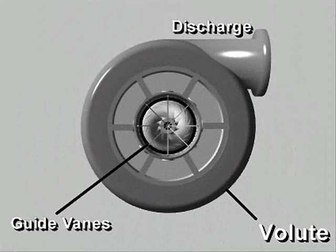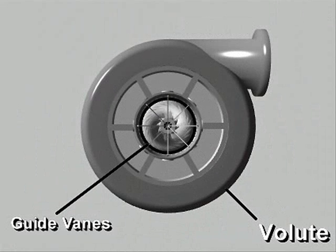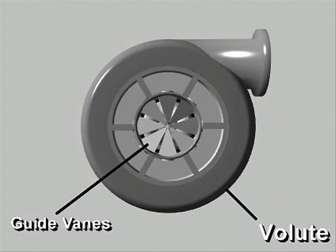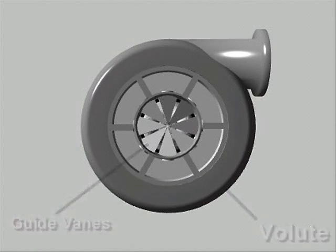Inlet guide veins control a centrifugal compressor's capacity. These movable veins are located in the suction opening. With veins turned fully open, the compressor produces its full cooling capacity. As the veins are closed, they reduce refrigerant flow through the compressor, reducing the capacity of the refrigeration cycle.